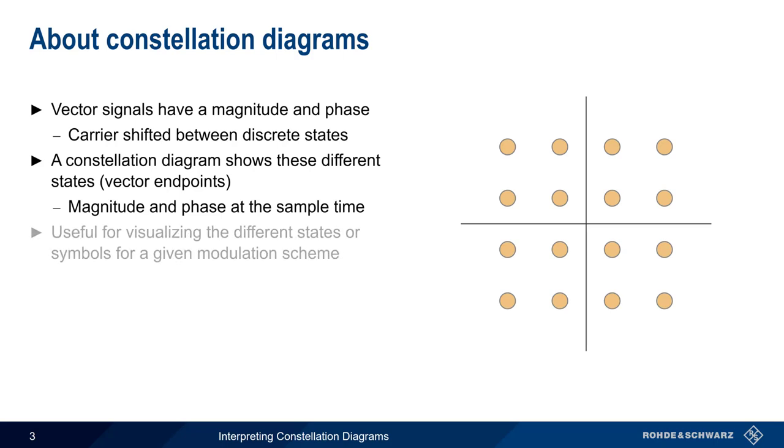Constellation diagrams are very useful in visualizing the different states or symbols of a given modulation scheme. For example, this constellation diagram has 16 symbols, arranged in the square shape produced by Quadrature Amplitude Modulation, or QAM.